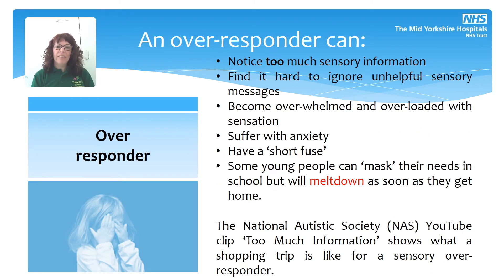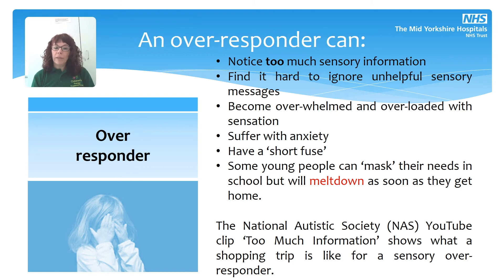On the other hand, over-responders are people who just notice everything. They're overwhelmed with too much sensory information and find it really hard to ignore messages that are unhelpful — they can't help but pick them up. What we quite often see from people who become overwhelmed with sensation is that they become quite anxious or have quite a short fuse, because you can only handle so much before one more thing triggers a big meltdown. Some children might be bothered by little sensory triggers throughout the school day, like the feel of their uniform, the smell of dinner cooking, or the sound of people shuffling books in the background.